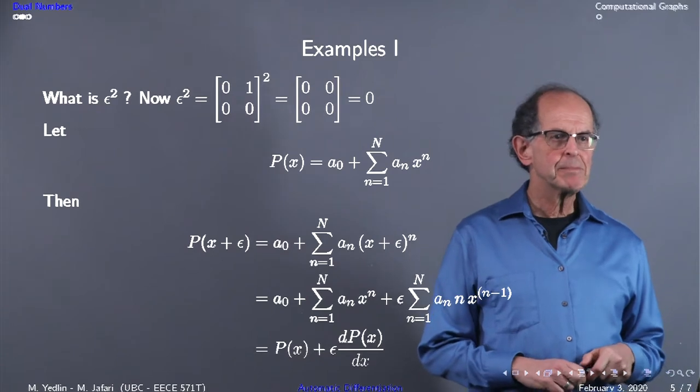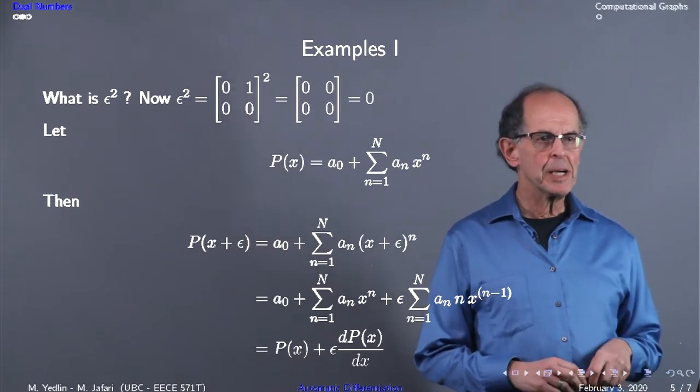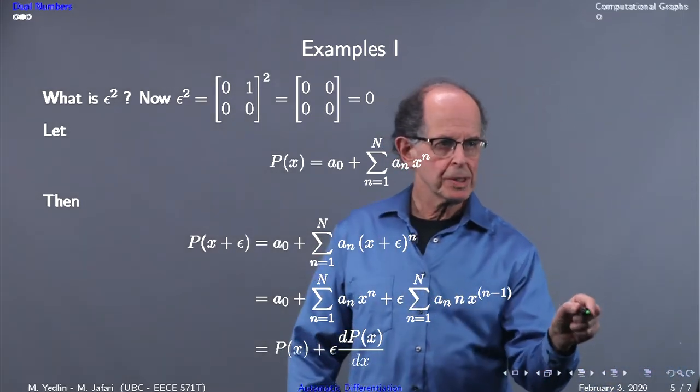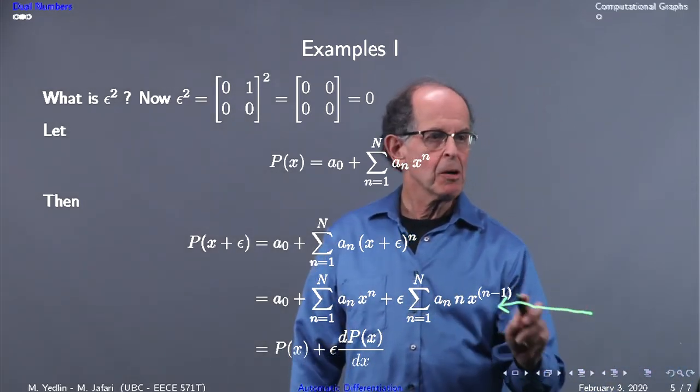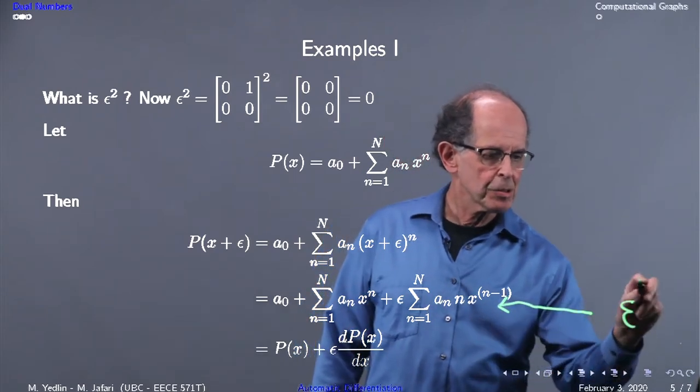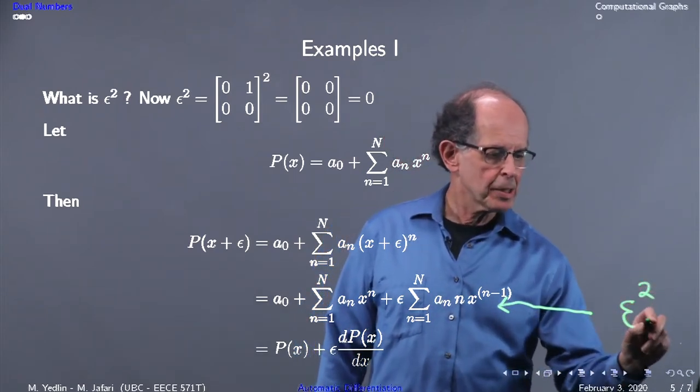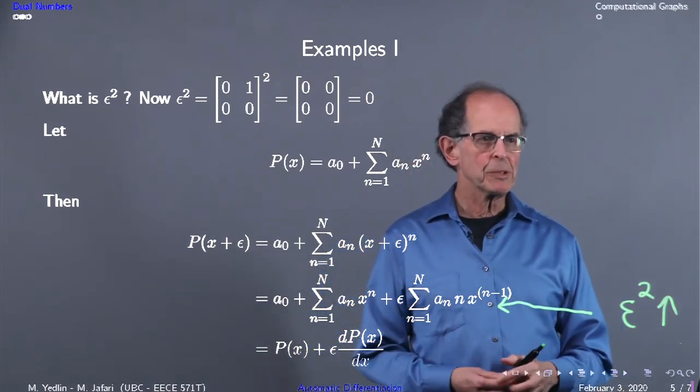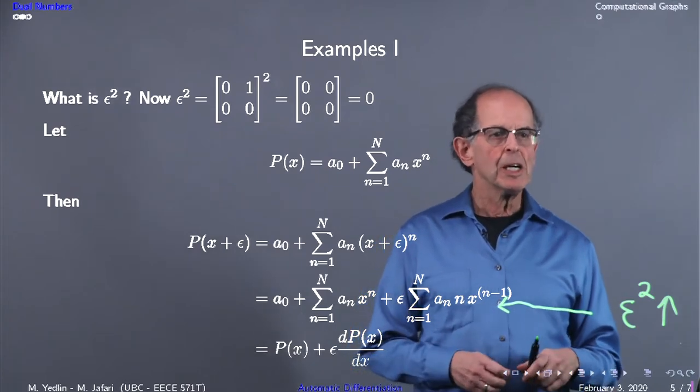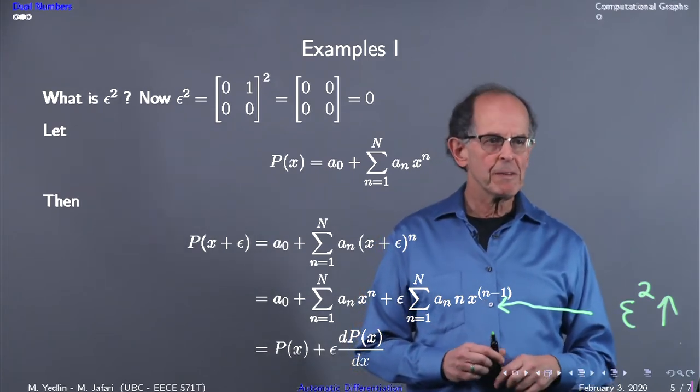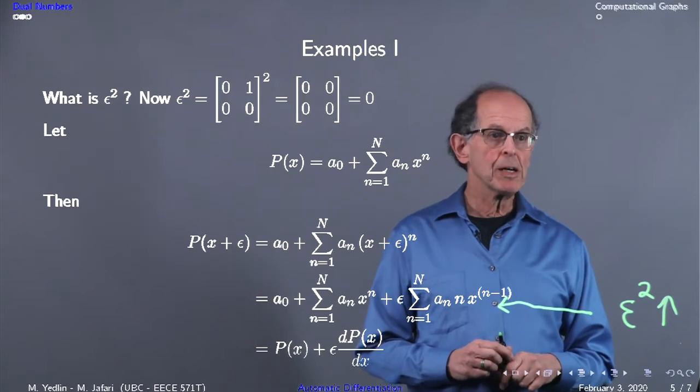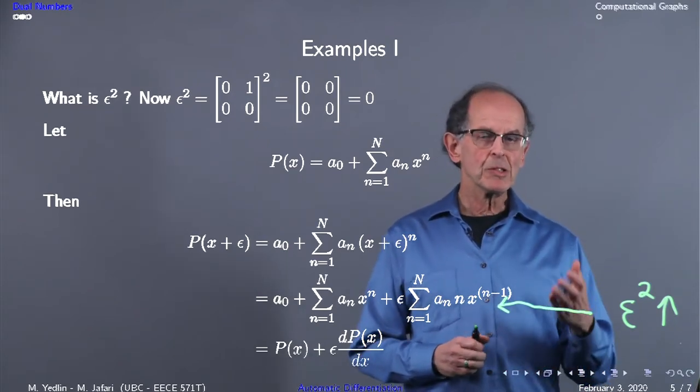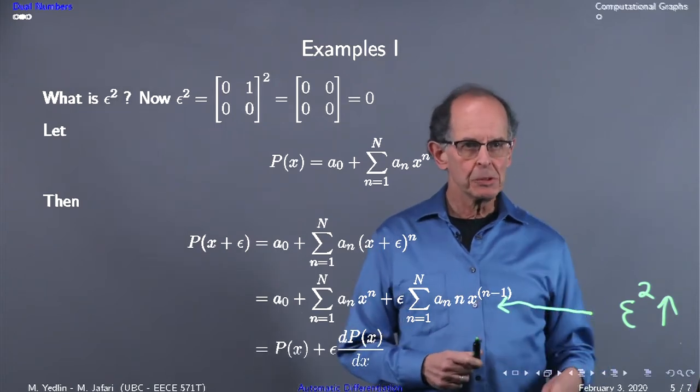If you do that, you get the first row, and we just have two terms because all other terms have epsilon squared and higher, which equal zero. The first term is p(x), and the second term is epsilon times dp/dx. So it's the derivative, just by evaluating in the manner of dual numbers.